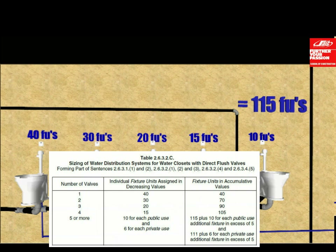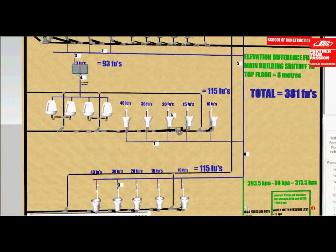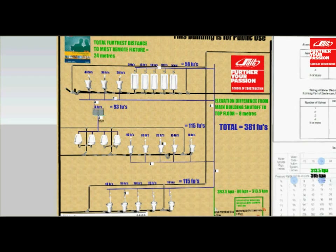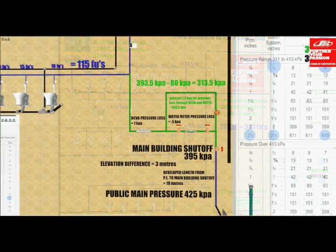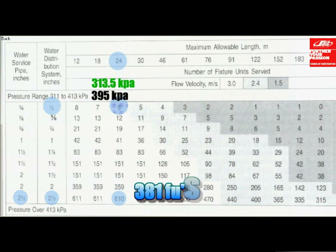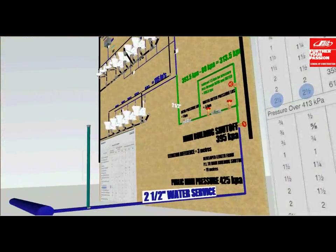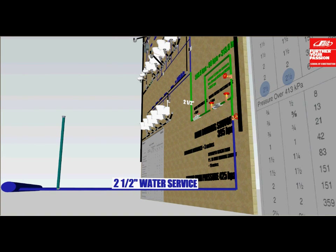We look at table 2632C, the water closet flushometer table, to figure out the fixture unit load for the five flushometer toilets on the second floor — they total 115 fixture units. We repeat the cycle for the first floor toilets: also five toilets worth 115 fixture units. Once you've added up all fixture units in the building, the grand total is 381 fixture units. Using 381, go to the table, find the column under 610 (which is higher than 381), scroll left to the water service pipe column — the result is an unusual two-and-a-half inches for your water service.